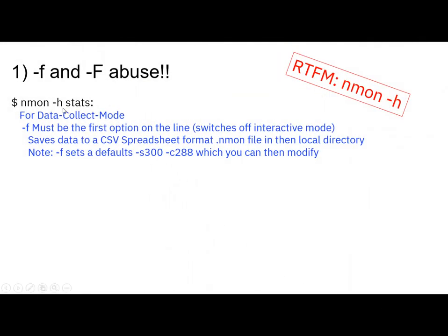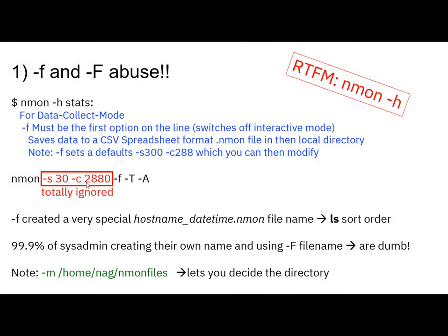F and F abuse. If you read the Nmon -h, it says in the data collection mode the minus F must be the first option on the line. It switches off interactive mode and saves the data to a comma-separated-value spreadsheet format .nmon file in the local directory. It also sets minus S — the number of seconds between snapshots — to 300 (five minutes), and minus C — the number of captures — to 288, meaning it will run for a day. So if you have a command with your own options and then hit the F, it will reset practically all the parameters you could have already typed in, and those are ignored.